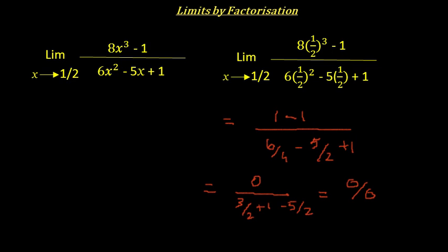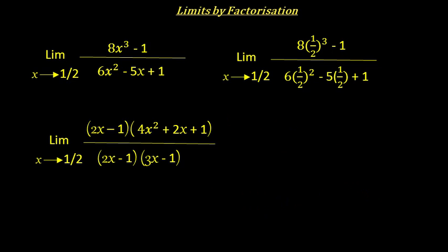Once again we need to factorize both expressions and find common factors that can be cancelled. The numerator 8x³ - 1 is of the form (2x)³ - 1³, which factors as (2x - 1)(4x² + 2x + 1). The denominator 6x² - 5x + 1 splits as (2x - 1)(3x - 1). We see (2x - 1) is common; after cancelling, what is left is (4x² + 2x + 1) / (3x - 1).